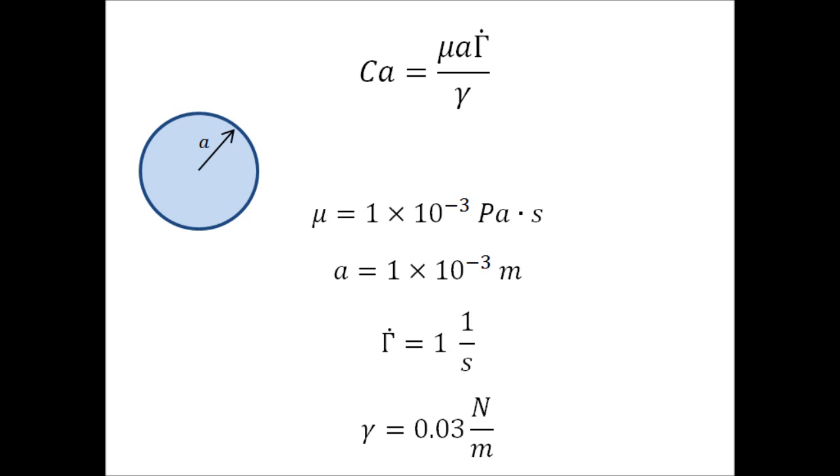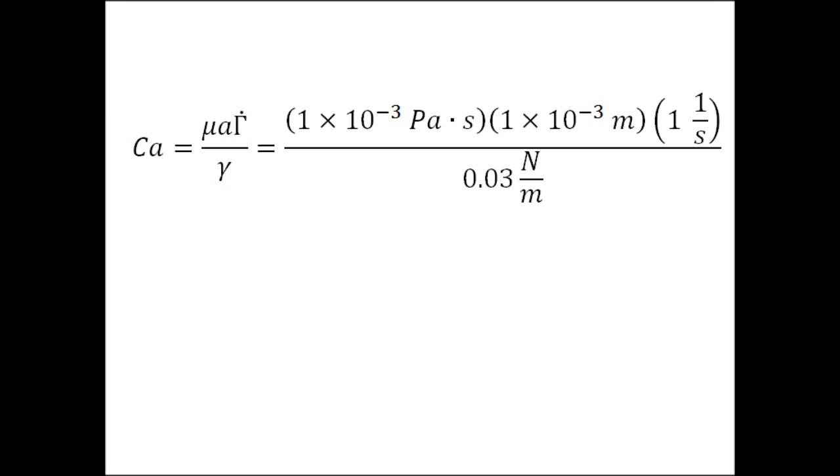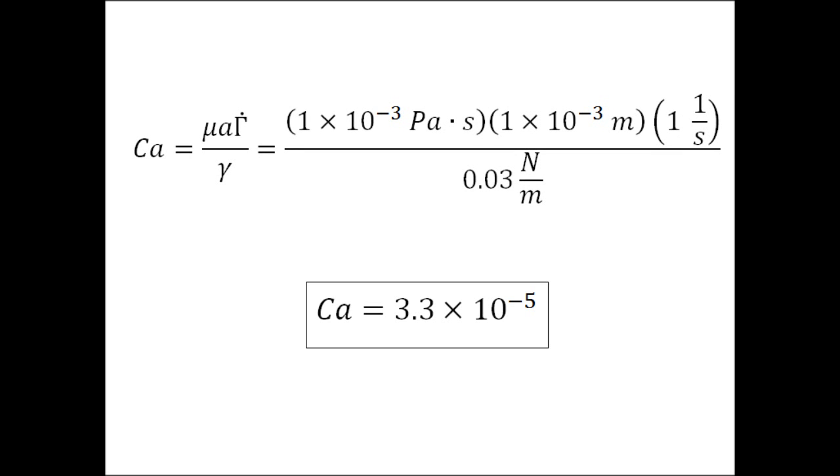So putting all these numbers into the equation, we see that all of the dimensions cancel out, since the pascal is defined as newtons per meter squared. Putting all these numbers in, we get a capillary number of 3.3 times 10 to the negative 5th.